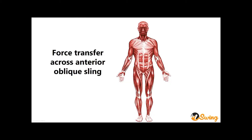Another way of looking at it is through what we call anatomical slings — it's the same thing. It's where muscles integrate with fascia and relate across multiple joints. For example, the anterior oblique sling is where the external oblique muscle crosses the midline via the linea alba into the internal oblique muscle on the opposite side, and then all the way into the adductor muscles of that opposite side.